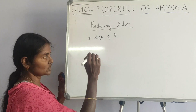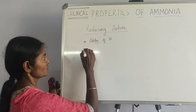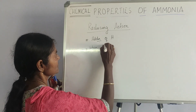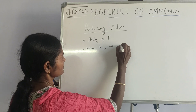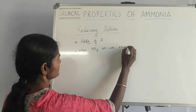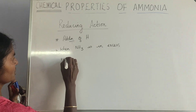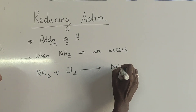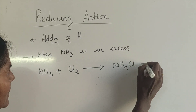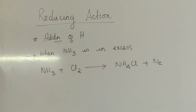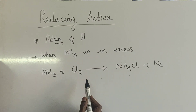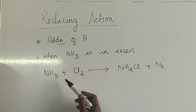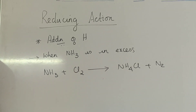This happens with chlorine in two reactions. One is when ammonia is in excess. Ammonia reacts with chlorine to give ammonium chloride and nitrogen. Ammonia reacts with chlorine to initially give hydrogen chloride, which further reacts with ammonia to give ammonium chloride and nitrogen.